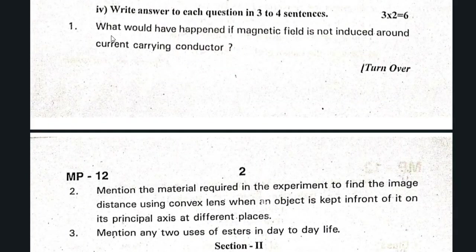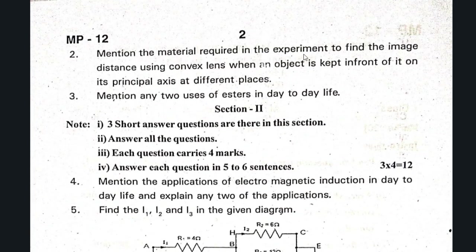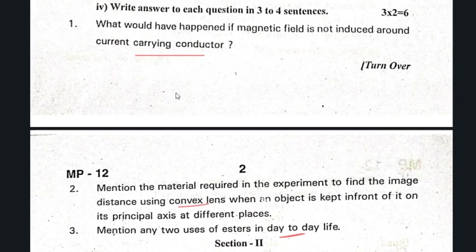Two marks: What would have happened if a magnetic field is not induced around a current-carrying conductor? Mention the materials required in the experiment to find the image distance using a convex lens when an object is kept in front of its principal axis at different places.